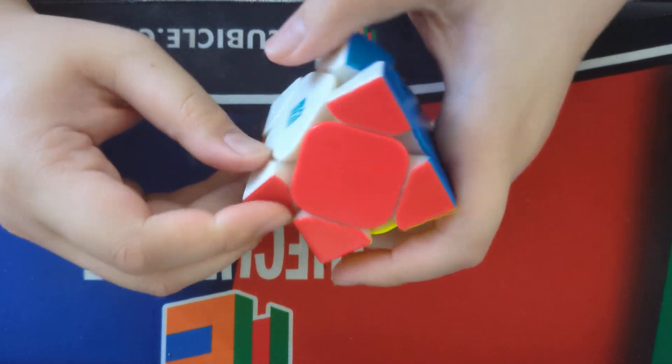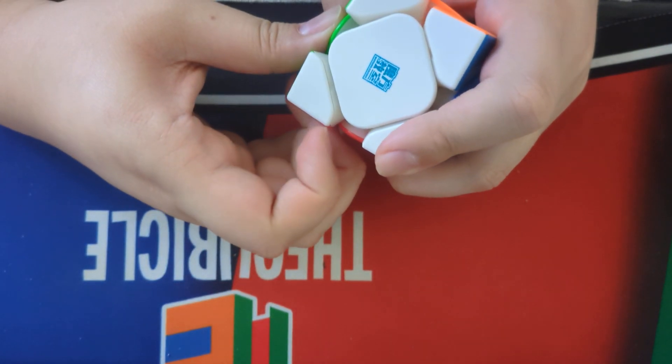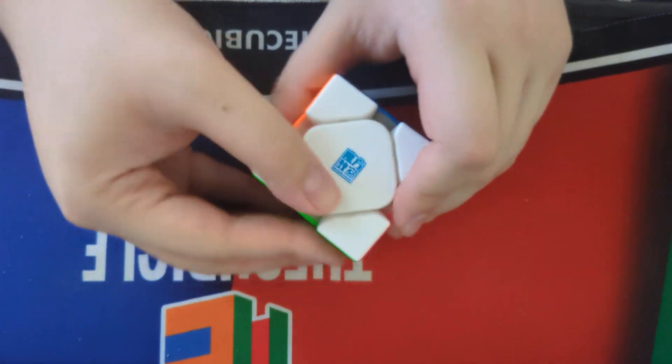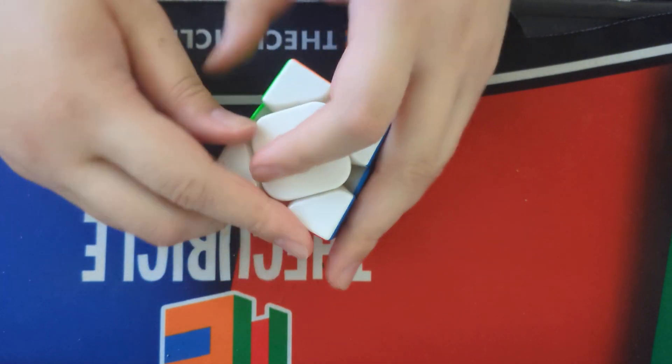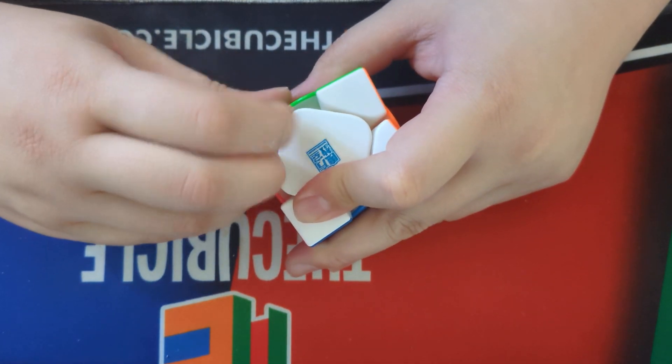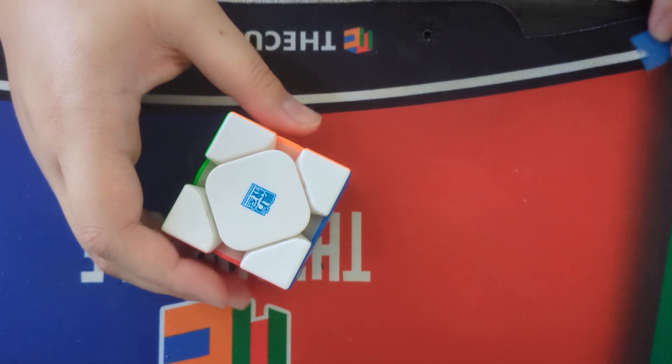So now that that is back on there, that will not come out that easily, but we can still remove it should we need to make adjustments onto the puzzle. So in order to remove it now that it's kind of in there, we can use some kind of sticker razor to kind of help push that up. So I don't have a sticker razor on my person. Actually I do right here.